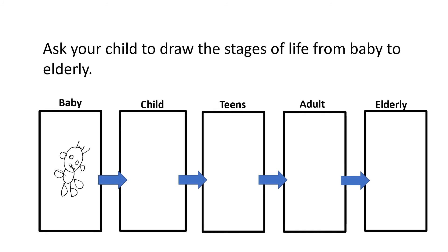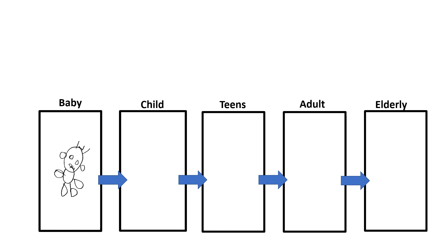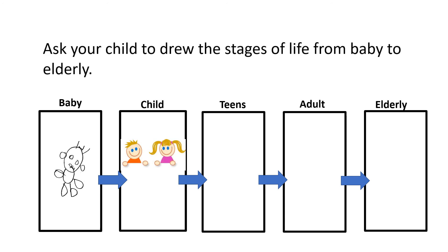After finishing the lesson, ask your child to draw the stages of life from baby to elderly. You can draw a picture of a baby, or put your own picture in this box. Then draw the picture of a child and complete the rest of the assignment.